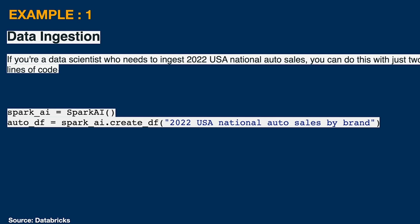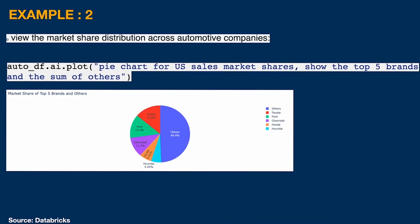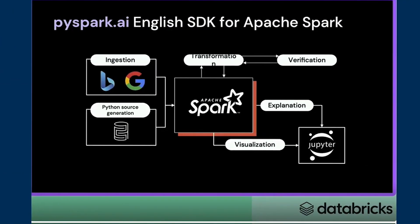No need to learn any language — anybody can write and work with this. Example two: if we want to view the market share distribution across automotive brands, we can call `df.ai.plot()` and write in natural language: 'Pie chart for US sales market shares, show the top five brands and the sum of the others.' That generates a pie chart with the market share of the top five brands and others. See how simple it is!